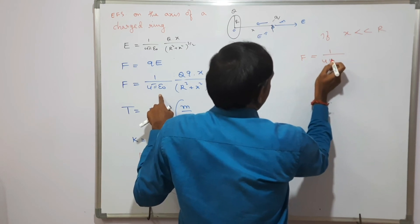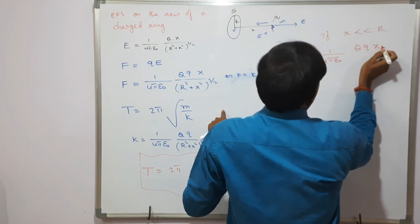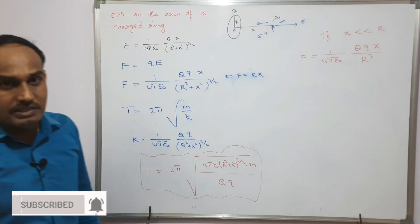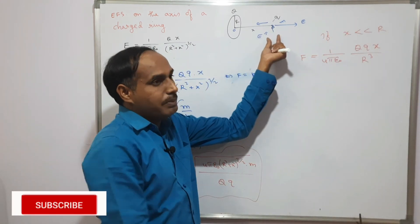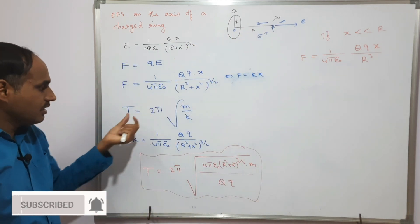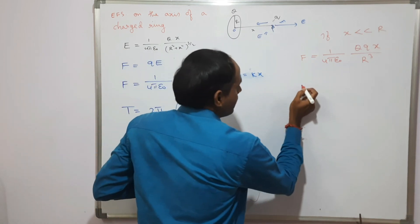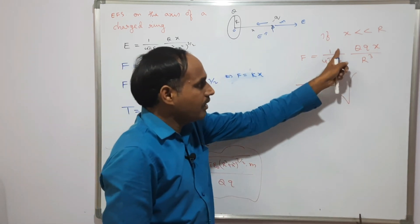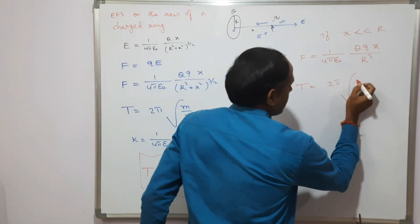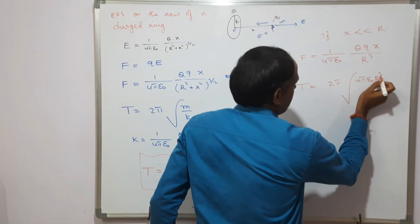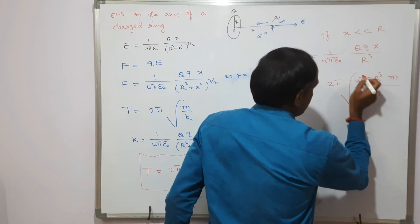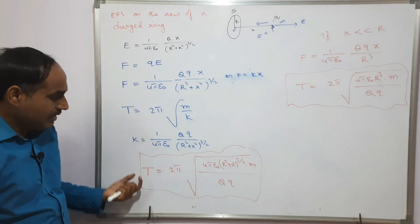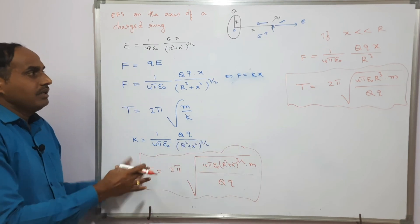If the particle is placed very close to the center such that x << r, then r² + x² ≈ r², and (r²)^(3/2) = r³. The force simplifies to F = (1/4πε)·qQ·x/r³, giving k = qQ/(4πε·r³). The simplified time period is T = 2π√(4πε·m·r³ / qQ).